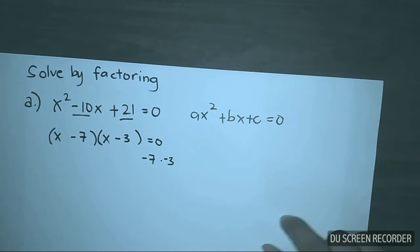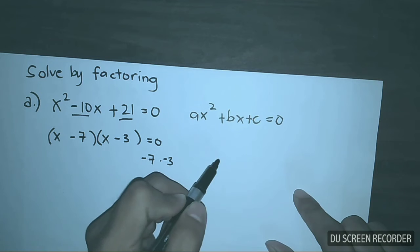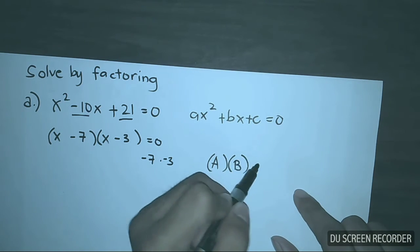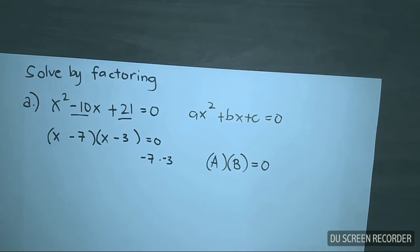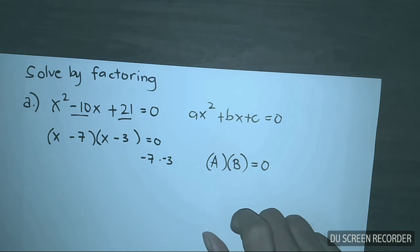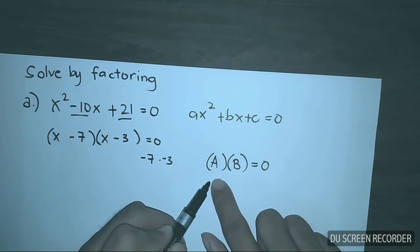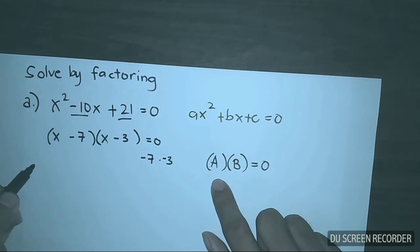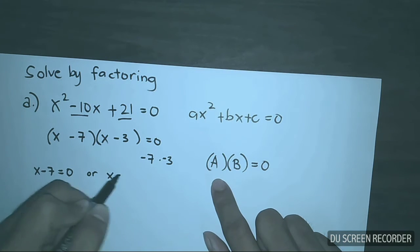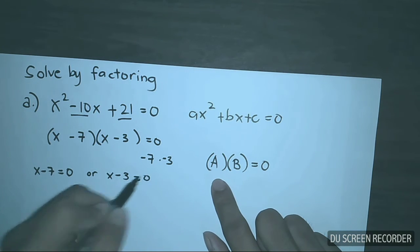Now applying the zero product property, which states that if A times B is equal to 0, then at least one of them must equal 0. So this can be written as x minus 7 is equal to 0, or x minus 3 is equal to 0.